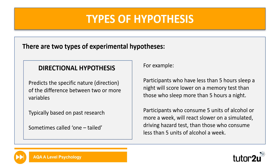Here are a couple of examples of directional hypotheses. Participants who have less than five hours sleep a night will score lower on a memory test than those who sleep more than five hours a night. Participants who consume five units of alcohol or more a week will react slower on a simulated driving hazard test than those who consume less than five units of alcohol per week. You might spot in directional hypotheses words like 'react slower' and 'less than' — all of these terms indicate the direction of results.